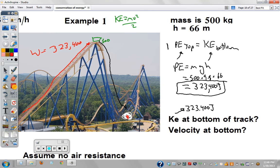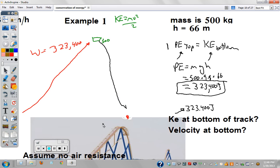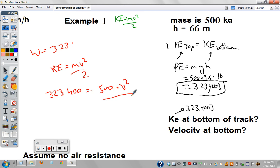Now we need to find velocity. You use the formula. Plug in what we know: 323,400 equals the mass, 500, times velocity squared over 2.